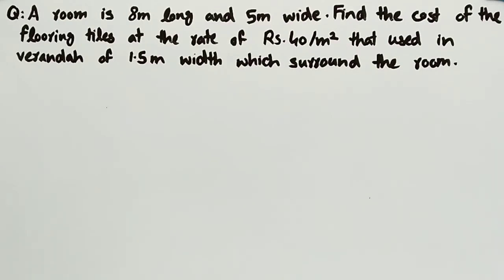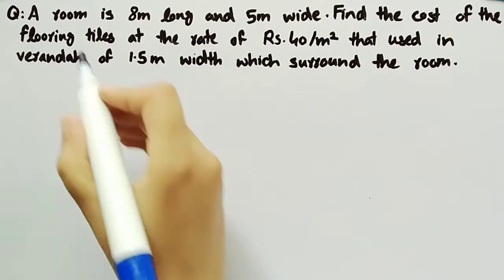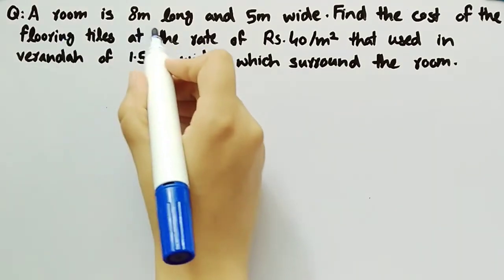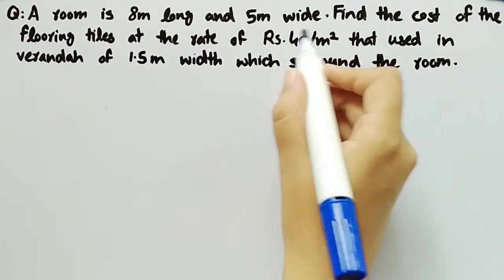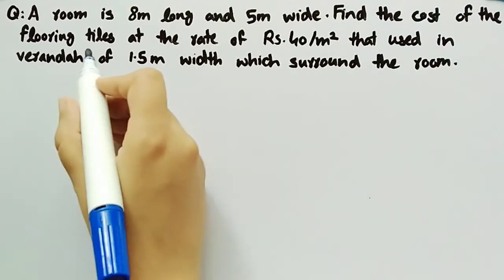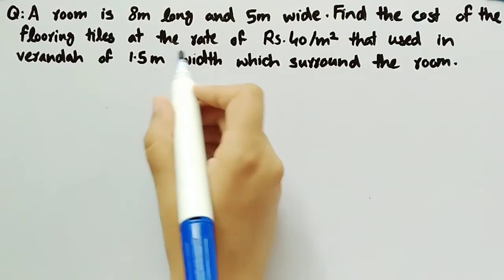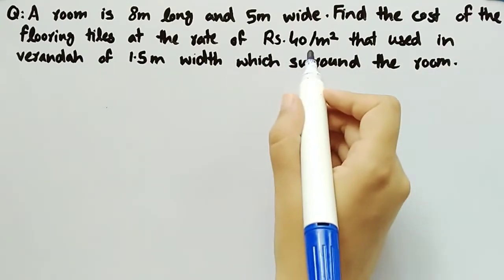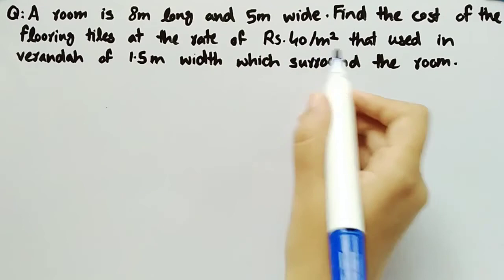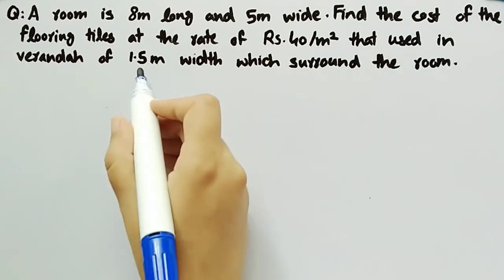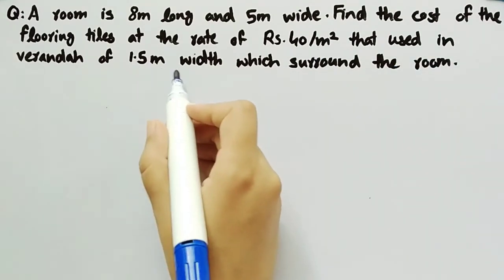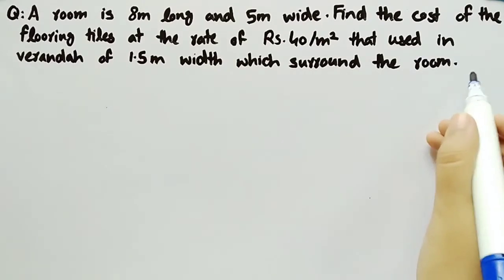In this video we will discuss a question in which it is given that a room is 8 meter long and 5 meter wide. Find the cost of the flooring tiles at the rate of rupees 40 per meter square, used in a veranda of 1.5 meter width which surrounds the room.